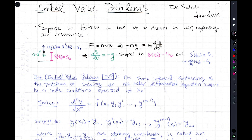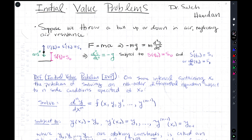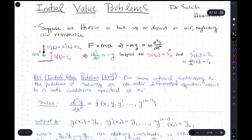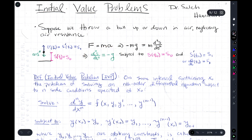Sometimes there are multiple curves that run through a particular point. We can visualize the initial value problem with a physics problem: suppose we throw a ball up or down in the air, neglecting air resistance. This is a second-order differential equation in position. Newton's second law tells us F equals ma — we plug in negative mg for gravity, and on the right-hand side we write the second derivative of position with respect to time.